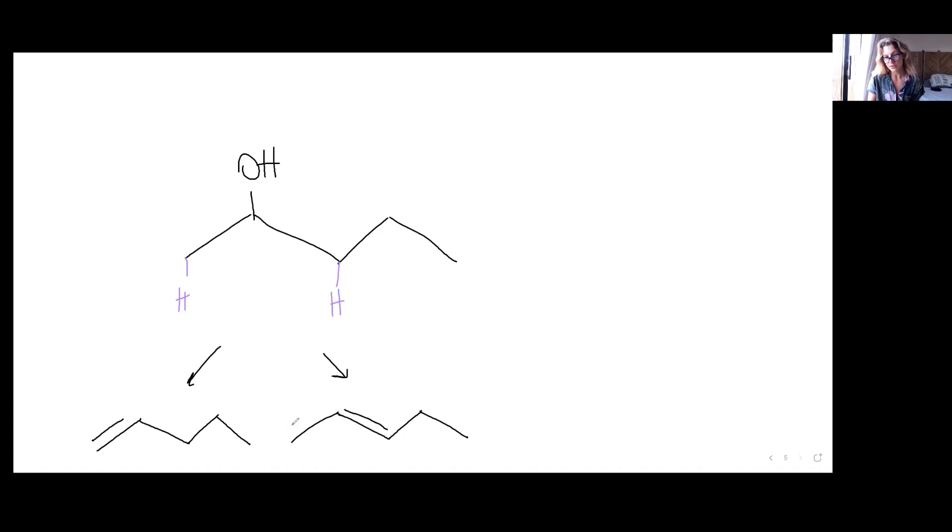So this one—notice that it has one CH3 here and one C2H5—it could also be this isomer, which would be either we can call it cis or we can call it the Z isomer—and this would be the E isomer. So several products can result from the elimination of alcohols.